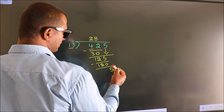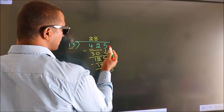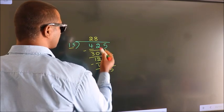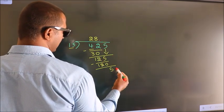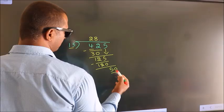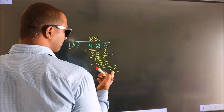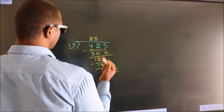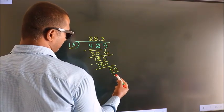After this, there are no more numbers to bring down. So what we do is put a decimal point and take 0. So 50. A number close to 50 in the 15 times table is 15 times 3, which is 45.